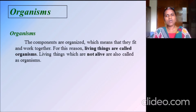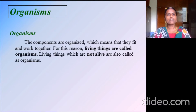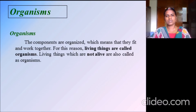The organs in a living thing are located in an orderly manner — the components are organized, which means they fit and work together. For this reason, living things are called organisms. So the definition of organism is: the components are organized, meaning they fit and work together, and therefore living things are called organisms.